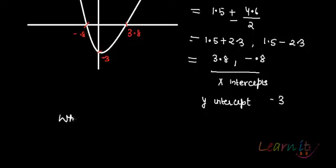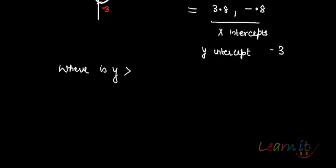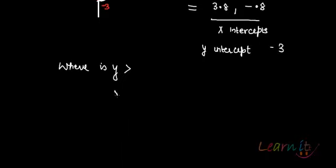Where is y greater than the given expression? This parabola looks like what I've drawn because -3 is the y-intercept and you have the x-intercepts here. Think about x = 3, which is to the left of 3.8. Then y = 3² - 9 - 3 = -3.